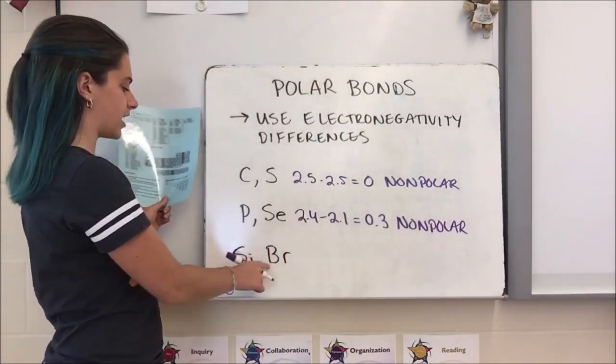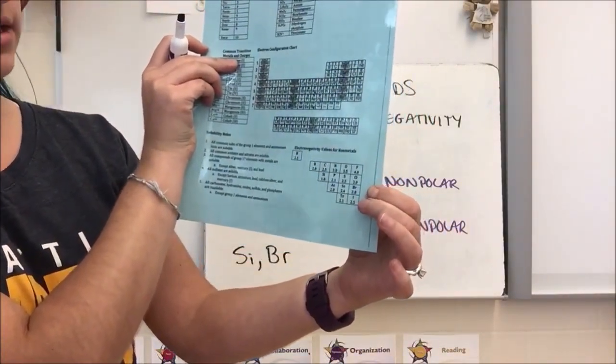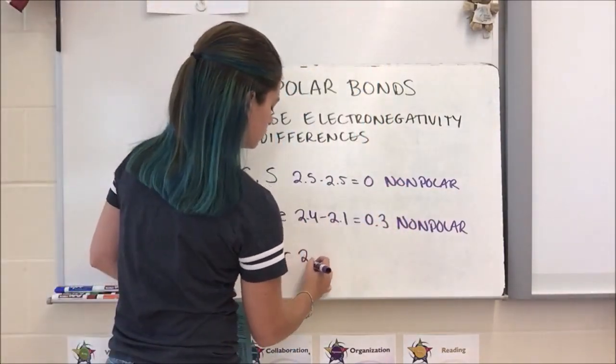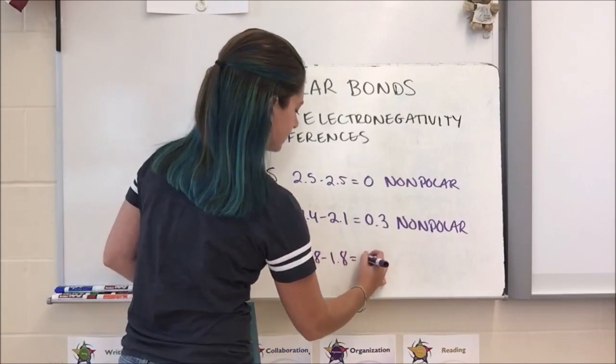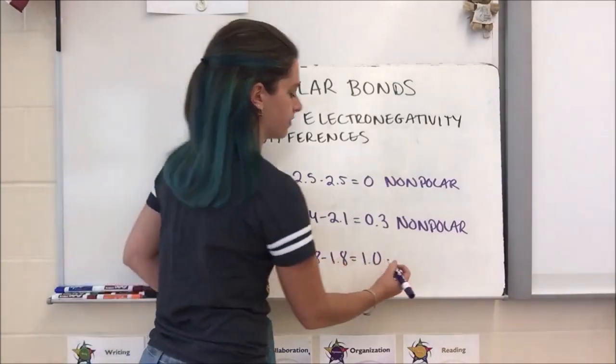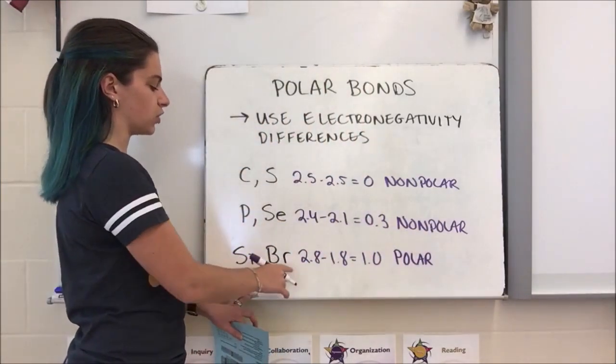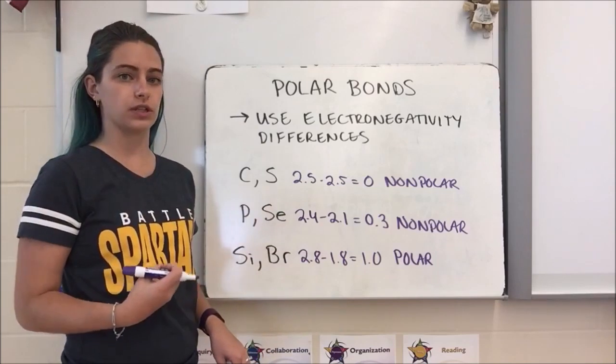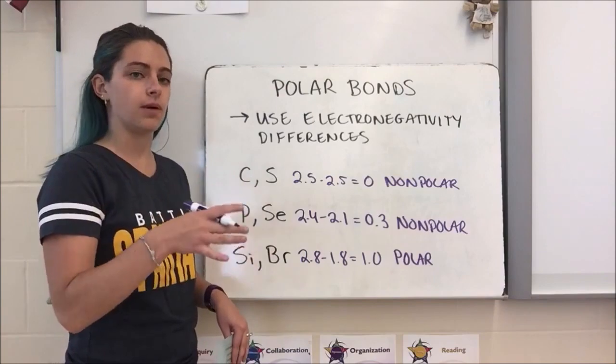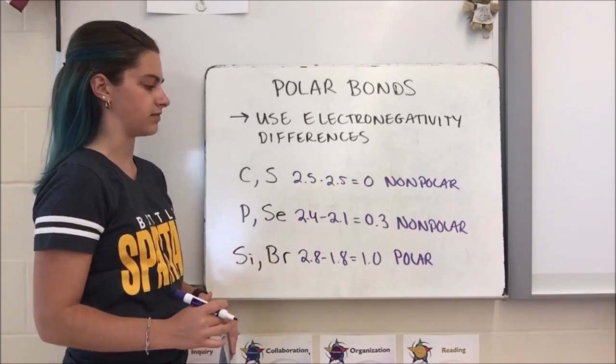Finally I have silicon and bromine. Silicon is 1.8, bromine is 2.8. If I subtract 2.8 minus 1.8 I get a difference of exactly 1.0. This value is bigger than 0.5 so that makes it a polar bond. What that means is the atom with the greater electronegativity value is going to pull more on those electrons, so it's going to be an uneven distribution of the electrons. They're not going to be right in the middle of that bond, they're actually going to be pulled closer to bromine since bromine has the greater electronegativity value.